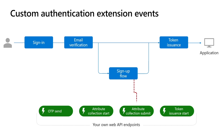Continuing with the signup flow, the On Attribute Collection Submit event occurs after the user enters their profile details and submits the signup form. This event can be used for validating or modifying information entered by the user, or blocking the signup process. The last one in the authentication pipeline is the On Token Issue Start event. This event is triggered once a user completes all their authentication challenges and the security token is about to be issued to the application. You can use this event to add claims from your own datastore into tokens returned to your application. This feature is referred to as a custom claims provider.